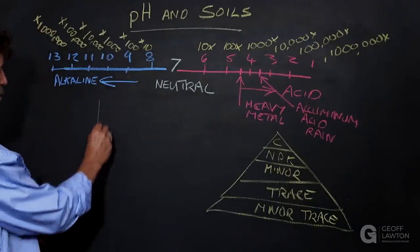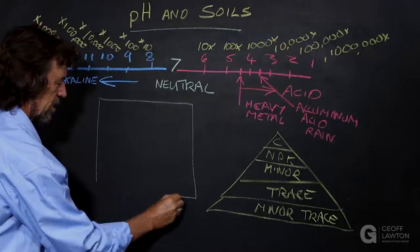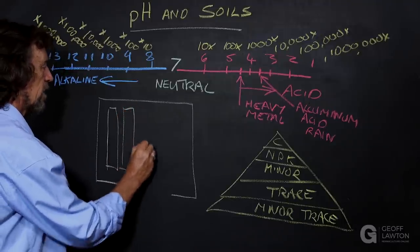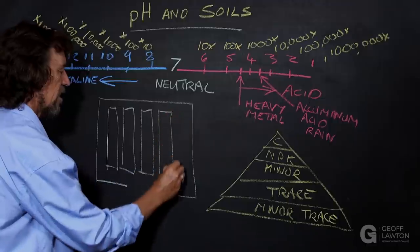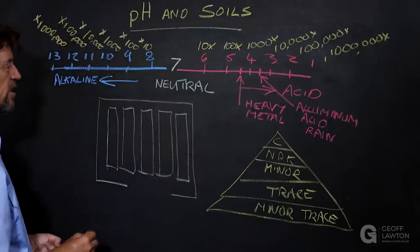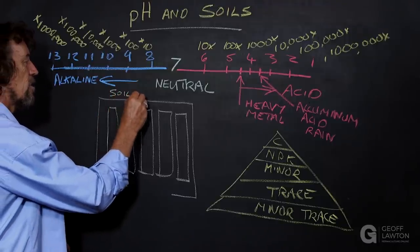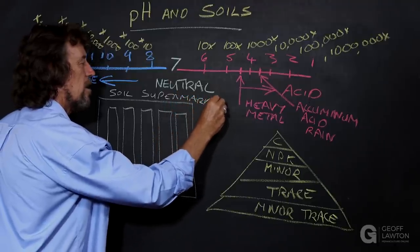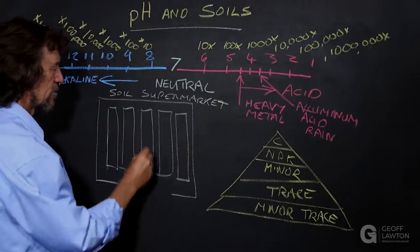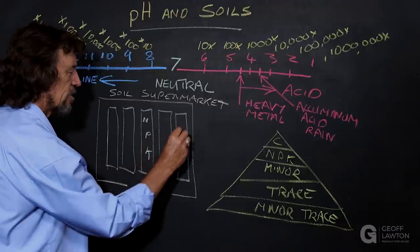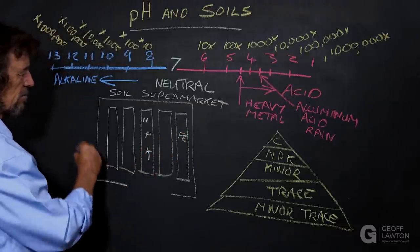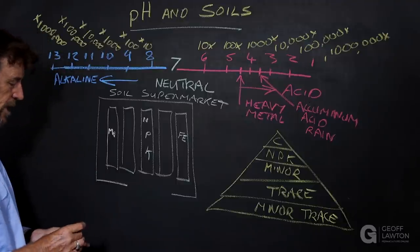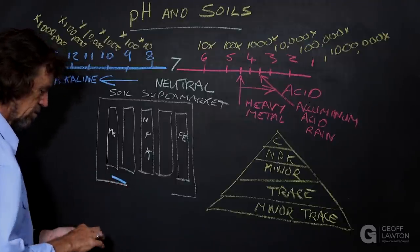If you think about it like a supermarket—the soil supermarket—you've got aisles in your supermarket, where most people understand this analogy, and all kinds of things are for sale. So this is the soil supermarket. And you've got all these different elements: N, P, K, Fe which is iron, Mg which is magnesium. You've got all these different elements for sale, like the goods in the supermarket.